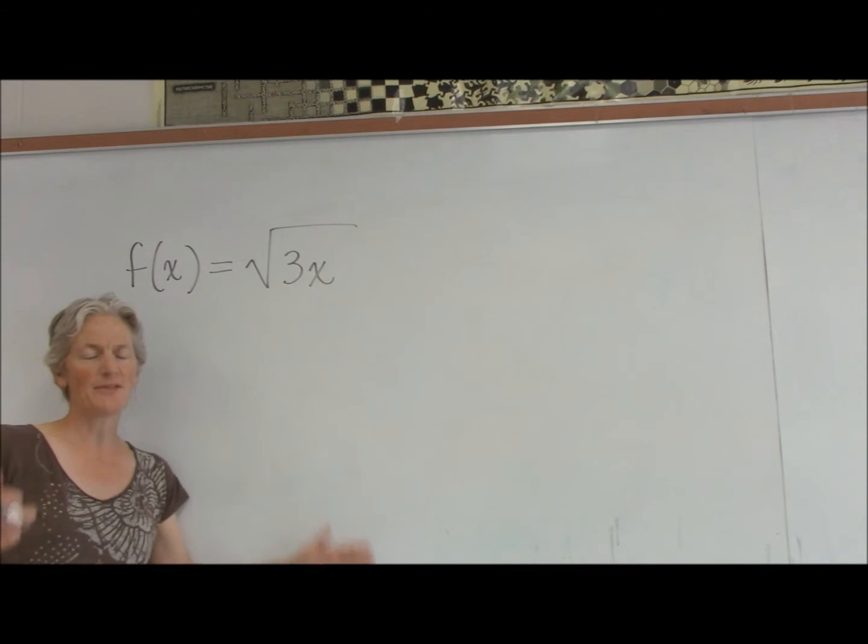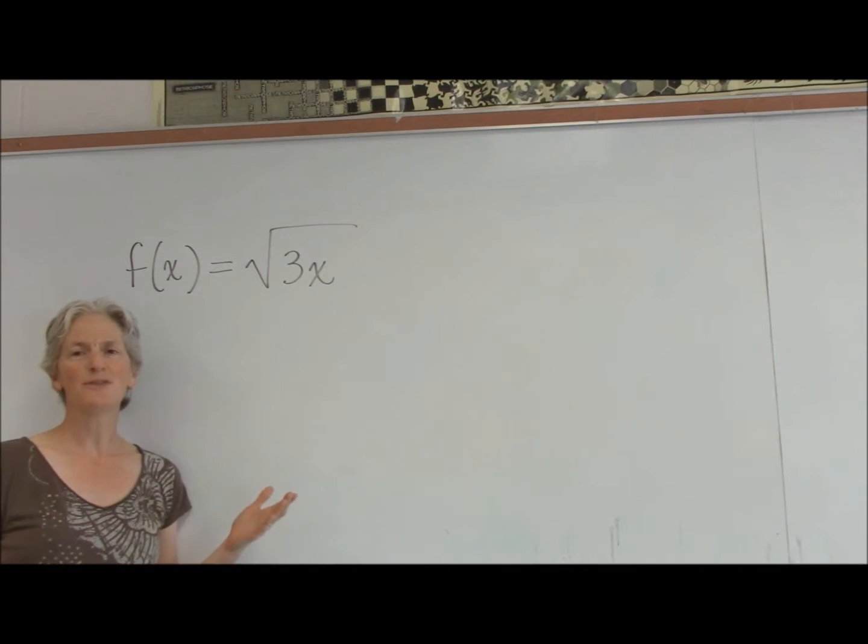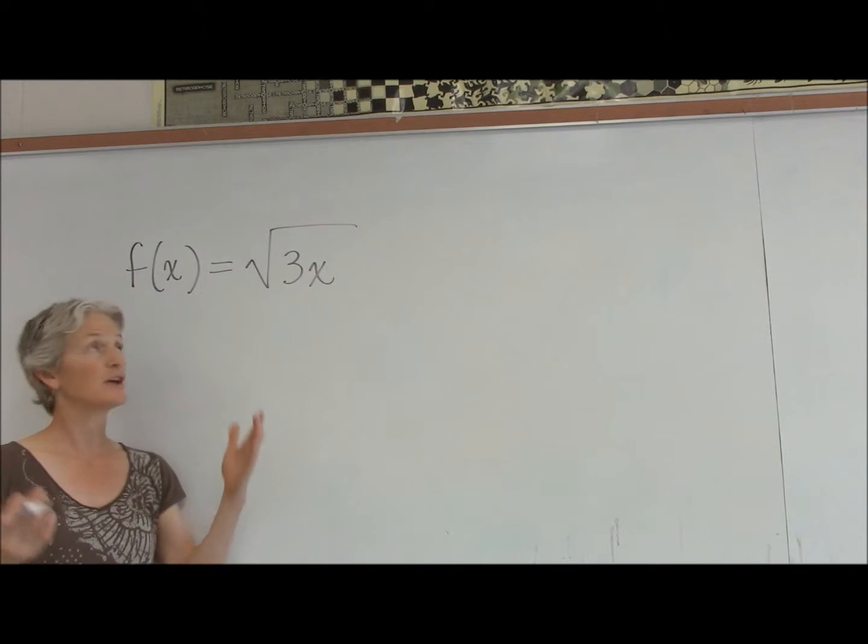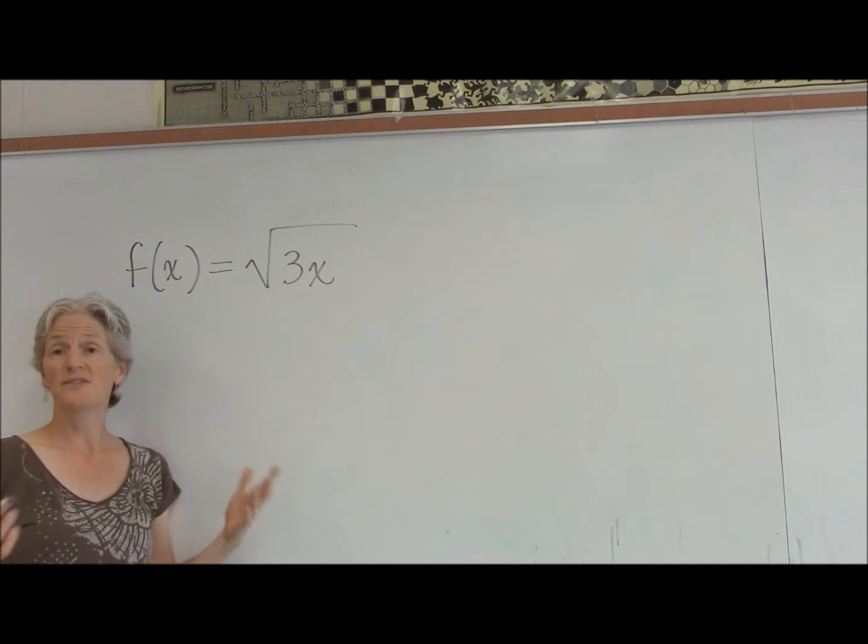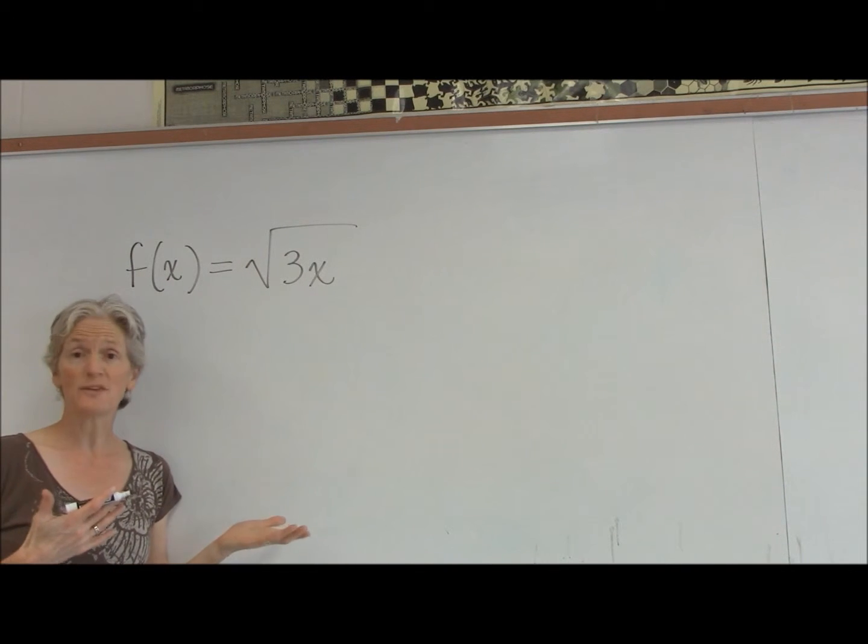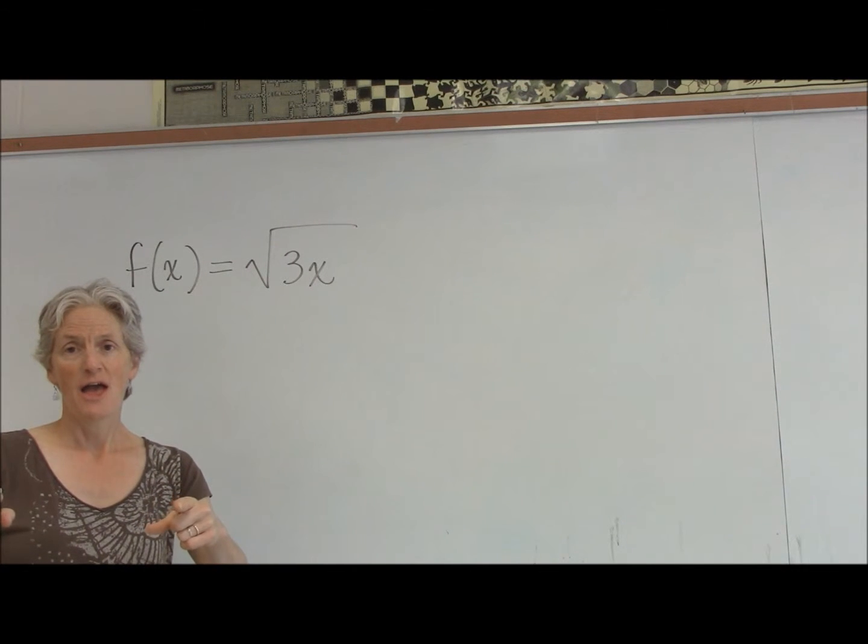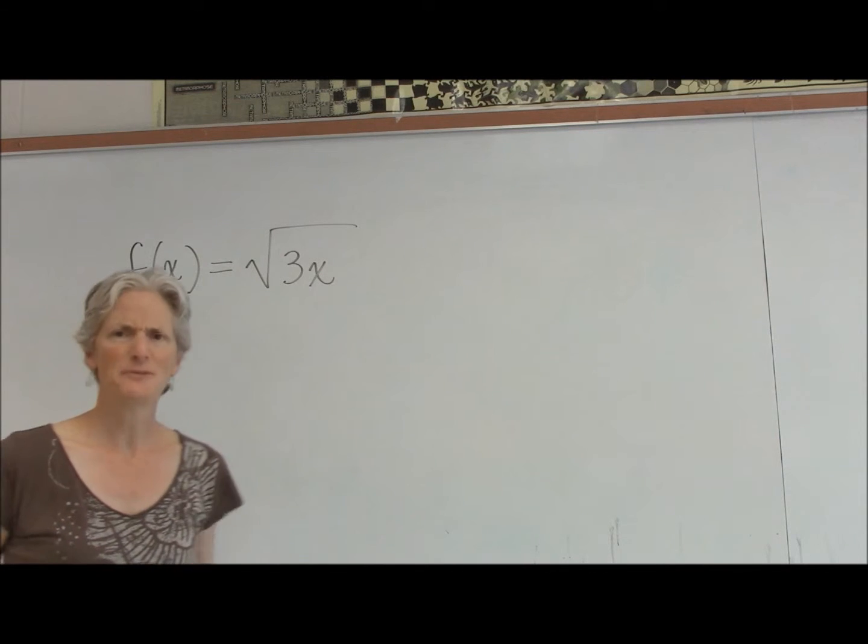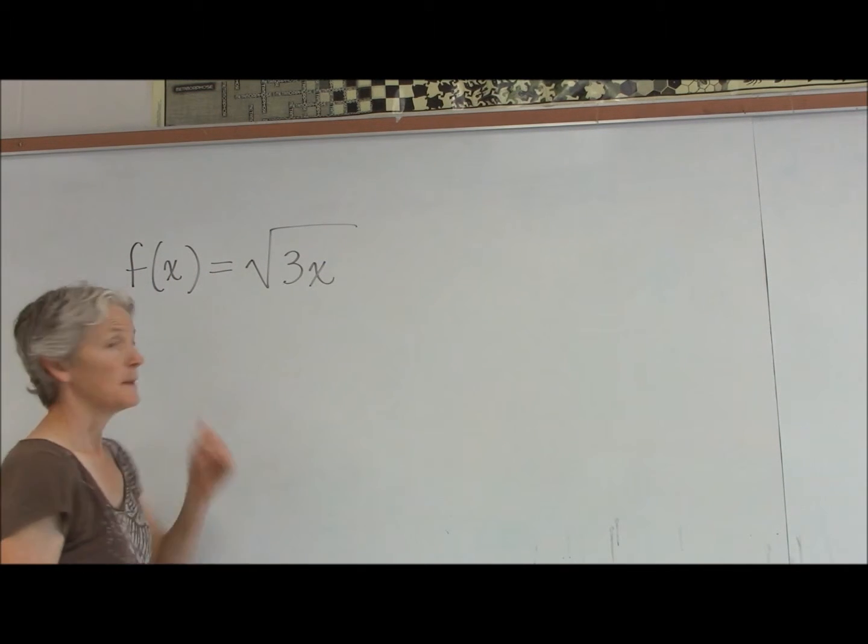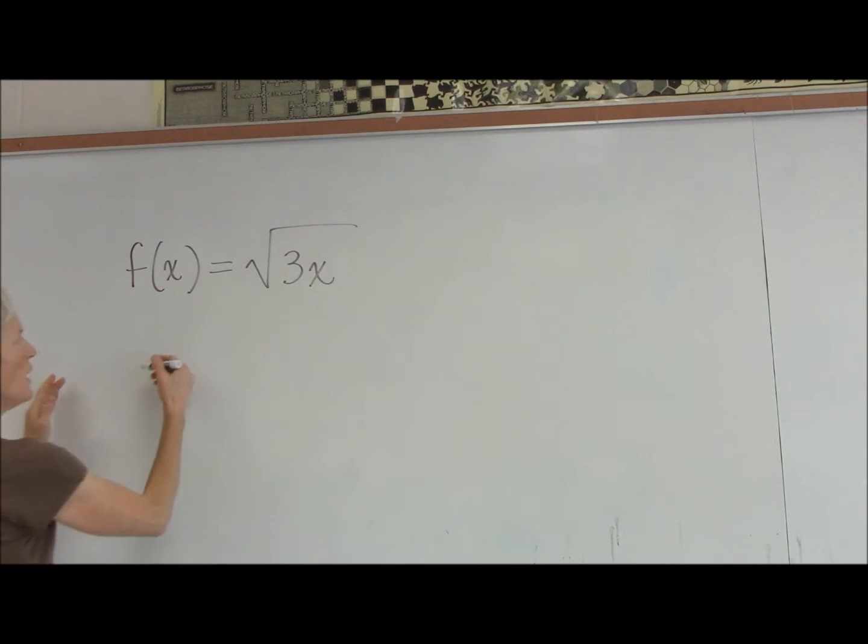So I think that many of you out there will say, hey, I know how to do this. I've got a whole shortcut. I could rewrite this as 3x to the 1 half, take the derivative using the power rule and the chain rule, and yes, you could. And should we, to verify what our final answer should be? Yeah, absolutely. Yeah, let's do the shortcut rule first, even though that's not what this video is really about.